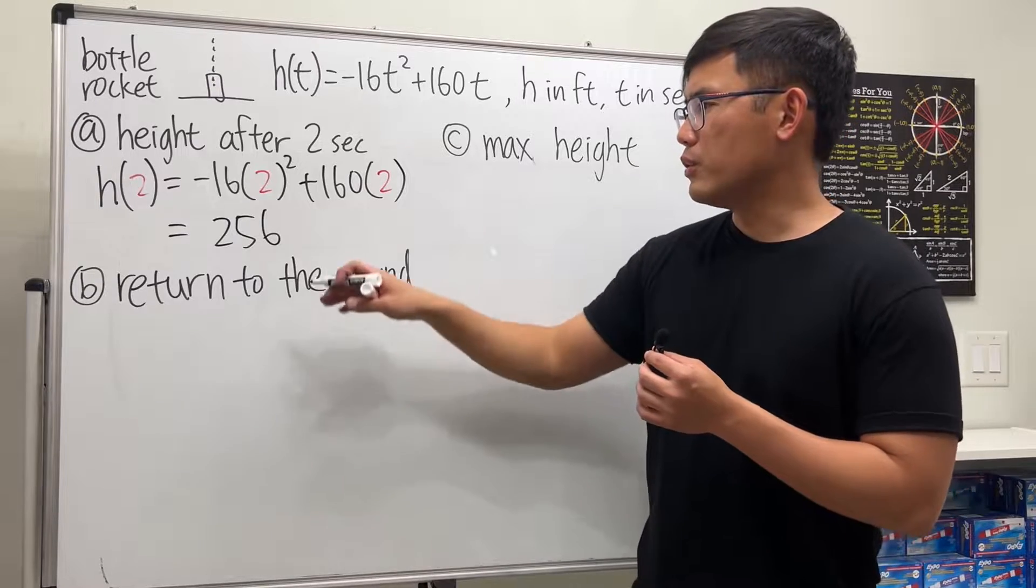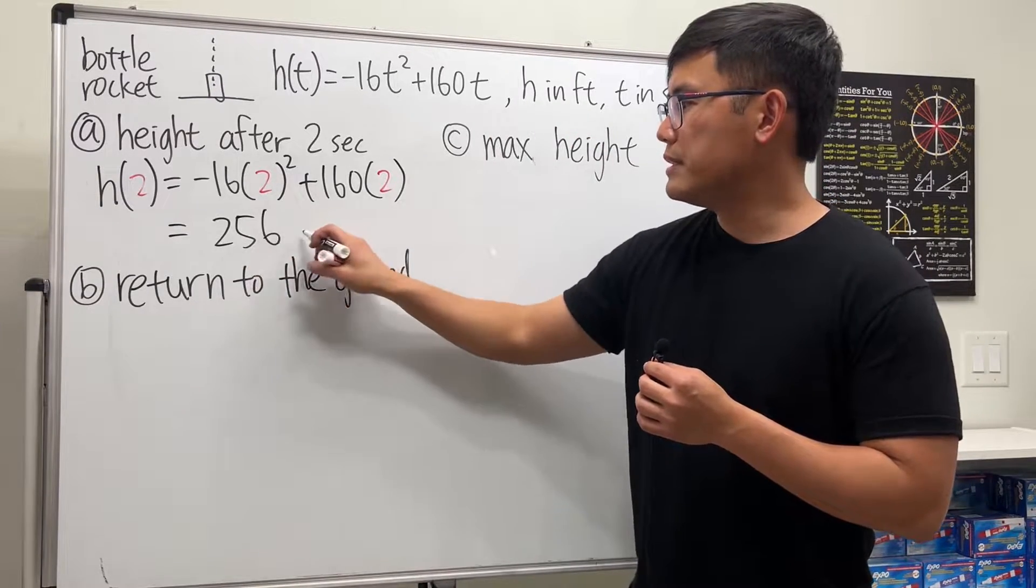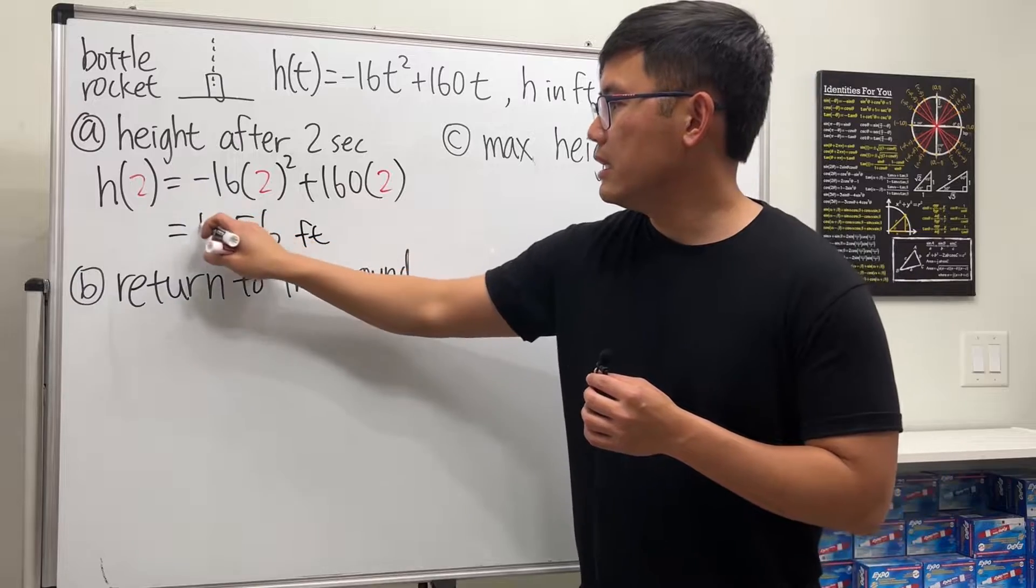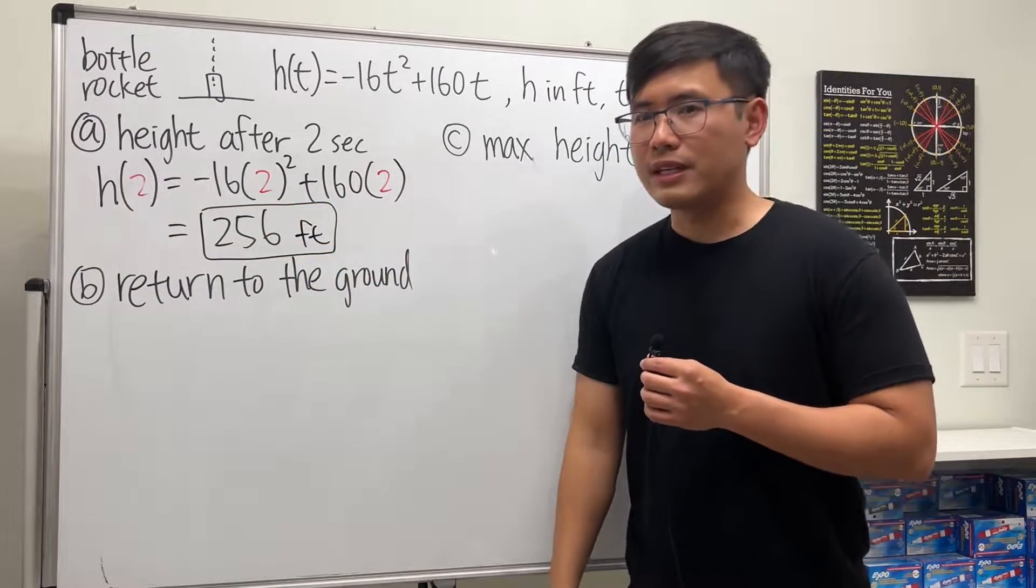Because this has a story behind it, make sure you include the units as well: 256 feet. That's the height of the rocket after two seconds.